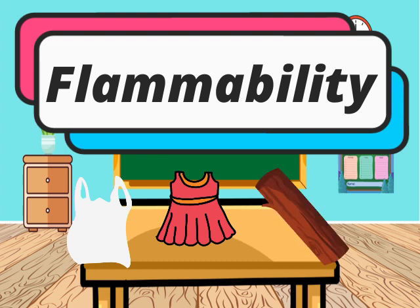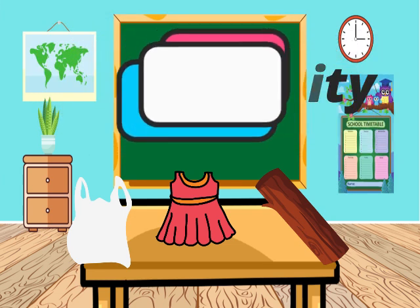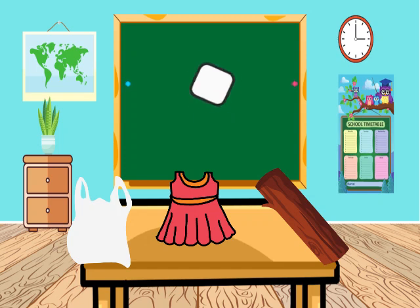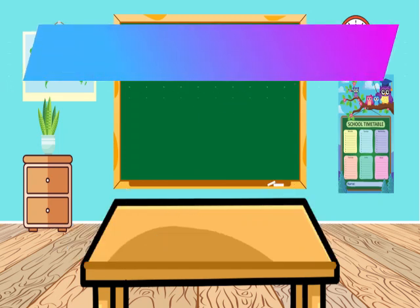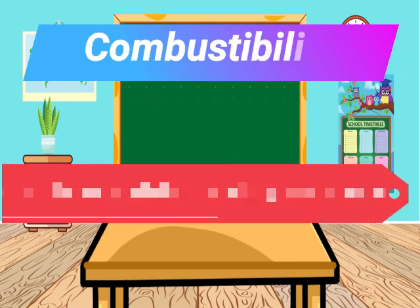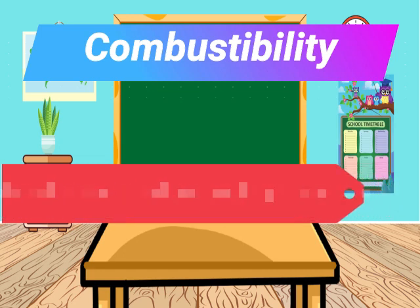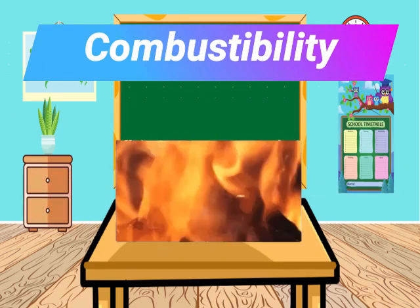Other materials such as glass, ceramics, and metals have the chemical property of non-flammability. Combustibility refers to the tendency of a material to burn above a working temperature. Combustible materials at high temperatures can change the properties of the materials.